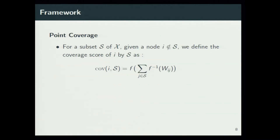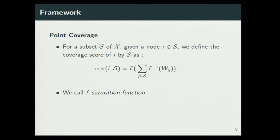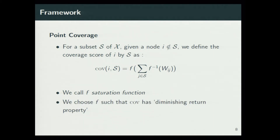Now we define point coverage. Given a subset S of X and an item i which is not in S, we define the point coverage of i by the given set S as given here. The function f we call a saturation function. We choose f in such a way that the coverage function has a diminishing return property, and I will come back to it later.